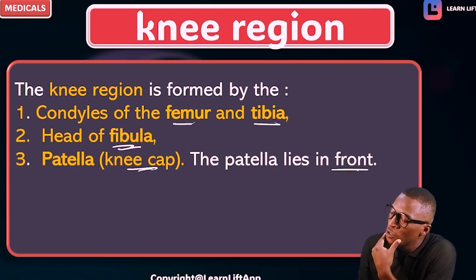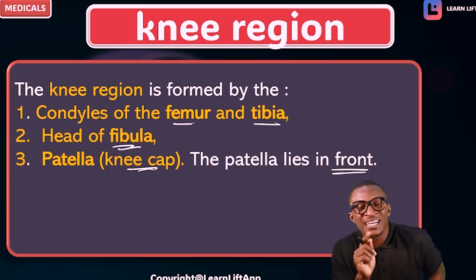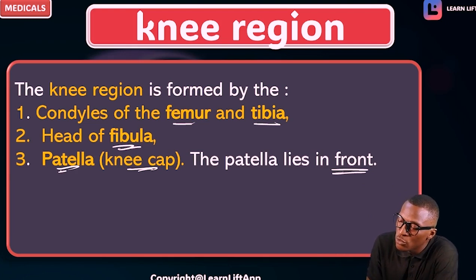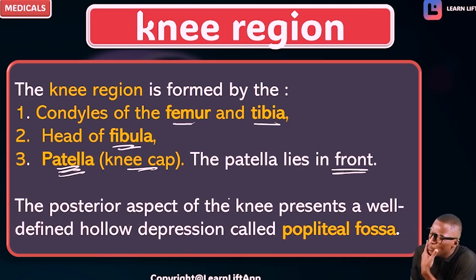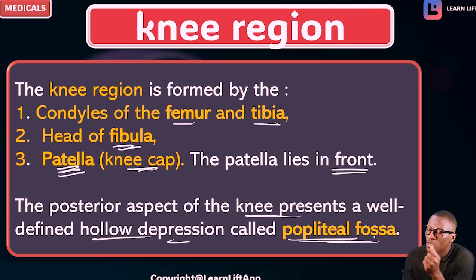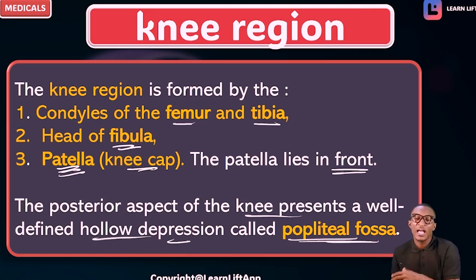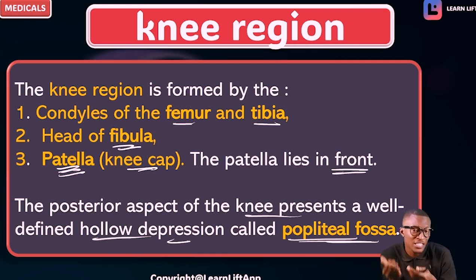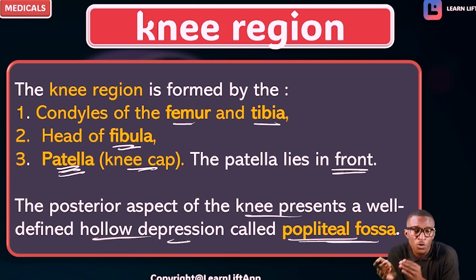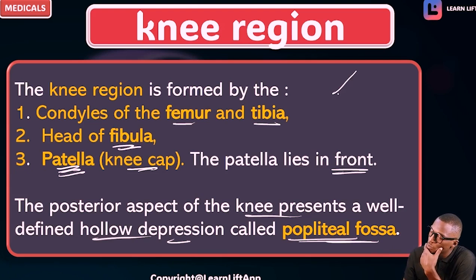Take note that the patella lies in front. The patella is a sesamoid bone. If they ask you what is the biggest sesamoid bone of the lower limb, it is the patella. Take note that the posterior aspect of the knee represents a well-defined hollow depression known as the popliteal fossa. Just as at the upper limb, anterior to the elbow joint is the cubital fossa, at the lower limb, posterior to the knee joint is a depression called the popliteal fossa — a diamond-shaped depression.